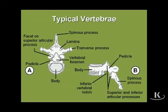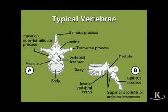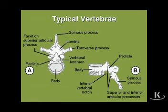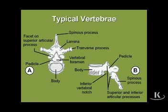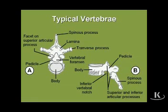The vertebral column is made up of a series of individual vertebrae. A typical vertebra has a vertebral body in the anterior part and a vertebral arch in the posterior part. The vertebral arch is made up of two pedicles and two laminae that meet in the midline. Emerging from the vertebral arch are transverse processes, to which muscles will attach.